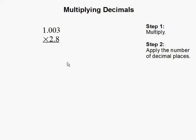Multiplying decimals. In this problem, we have 1.003 times 2.8.